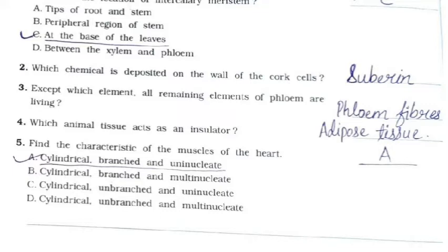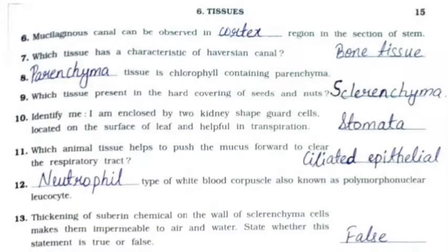Question 5: Find the characteristic of muscles of the heart. Answer: option A - cylindrical, branched, and uninucleate. Question 6: Musilaginous canal can be observed in the cortex region in the section of stem. Question 7: Which tissue has the characteristic of Haversian canal? Answer: bone tissue. Question 8: Parenchyma tissue is chlorophyll-containing parenchyma. Question 9: Which tissue is present in the heart covering of seeds and nuts? Answer: sclerenchyma.